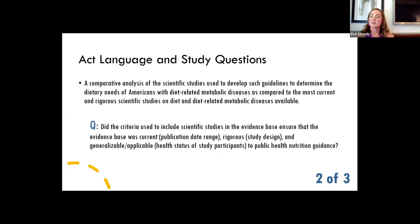The second study question is really around our consideration of scientific research. This section requests a comparative analysis of the scientific studies used to develop the guidelines to determine the dietary needs of Americans with diet-related metabolic diseases, compared to the most current and rigorous scientific studies on diet and diet-related metabolic diseases available. The question is really around whether the criteria used in identifying that research allow us to identify an evidence base that is current, rigorous, and generalizable to informing public health guidance.